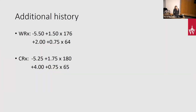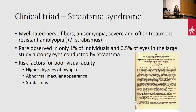For additional history: he is myopic in the right eye, which shouldn't surprise anyone, and he's wearing a hyperopic prescription in the left eye. On cycloplegic refraction he's appropriately corrected in the right eye, and underdosed in the left — which is exactly what I would have done: cut the plus for someone who is orthophoric without any crossing. The clinical triad we see with myelinated nerve fibers — anisomyopia and severe, often treatment-resistant amblyopia — sometimes gets the moniker of Straatsma syndrome. It's quite rare, seen in less than 1% of individuals. Risk factors for poor visual acuity include higher degrees of myopia approaching minus 10–13, involvement of the macula, and the presence of strabismus. This paper is actually the first description of that clinical triad, published in 1917.